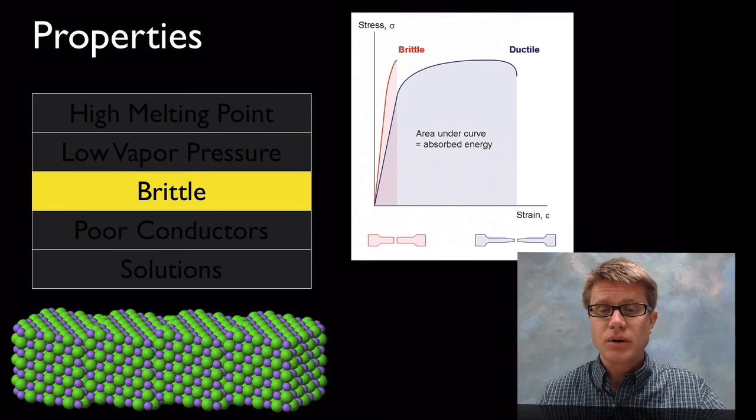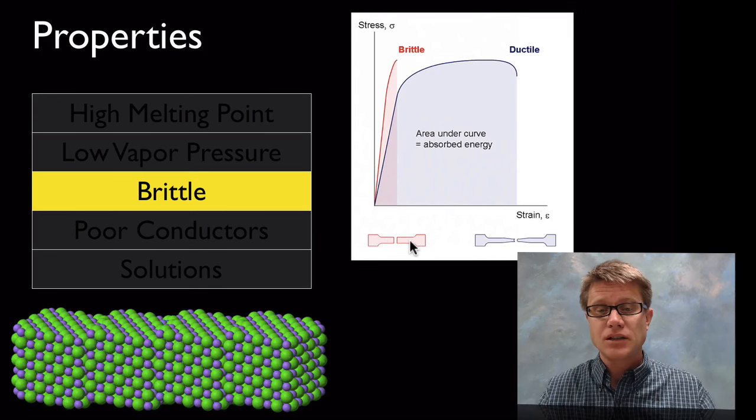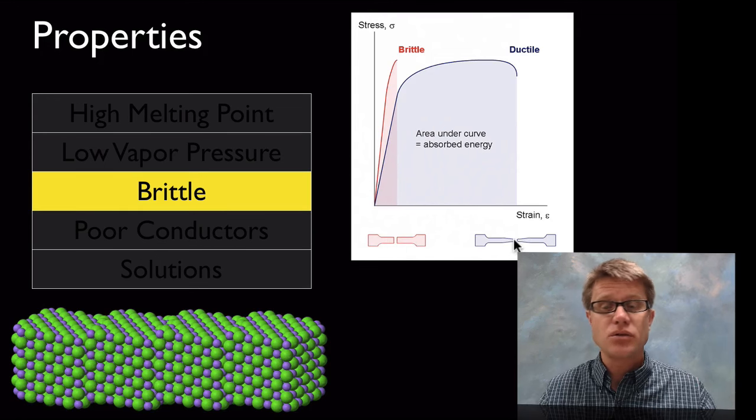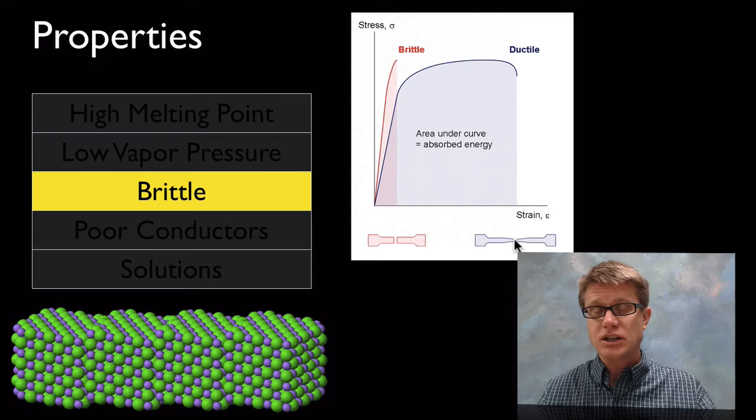It's also going to be incredibly brittle. What does that mean? If we take an ionic solid and just pull it from the sides it will break right in half. If we do that to a metal it would stretch, it's ductile.